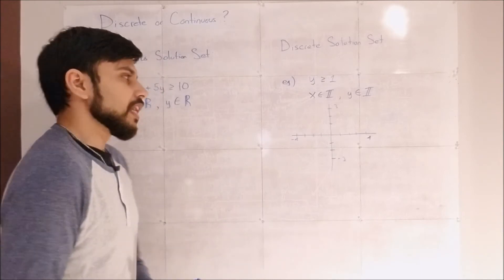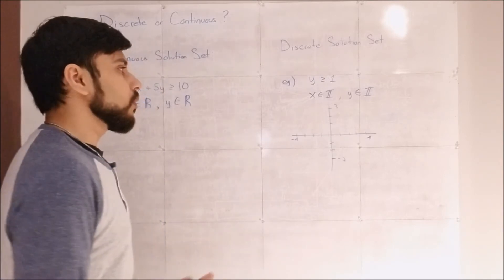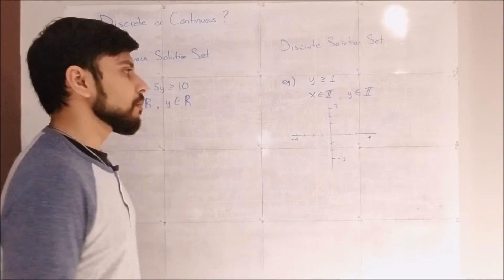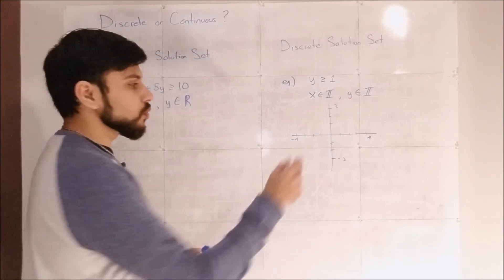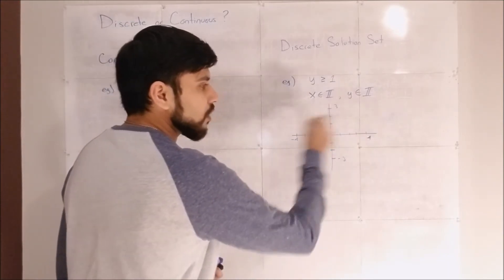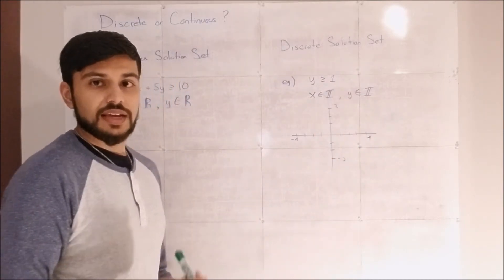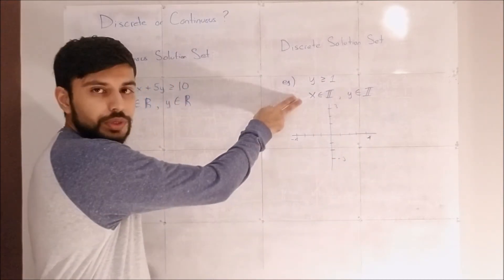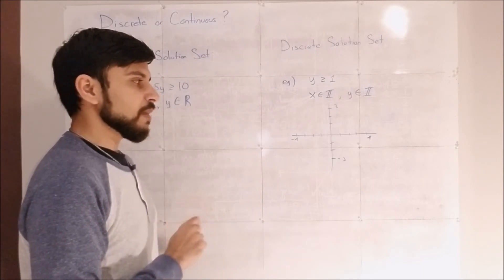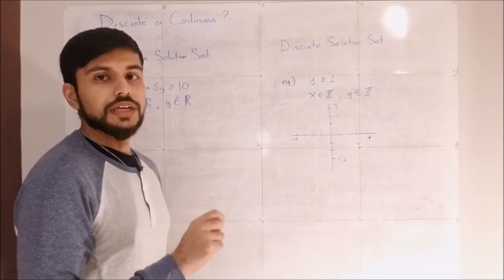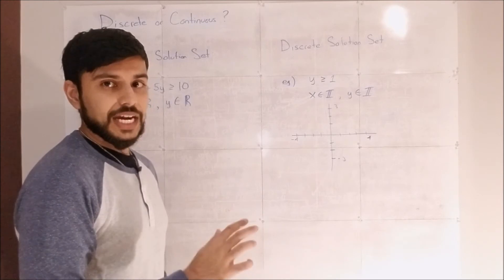So a simpler example would be like an extreme line or horizontal line. Y is greater than or equal to one. Well, I know if it was y equals one, it would be a line that's horizontal and just crossed my y axis at one. Because it's a discrete graph, I can only make my line covering the points that actually exist.